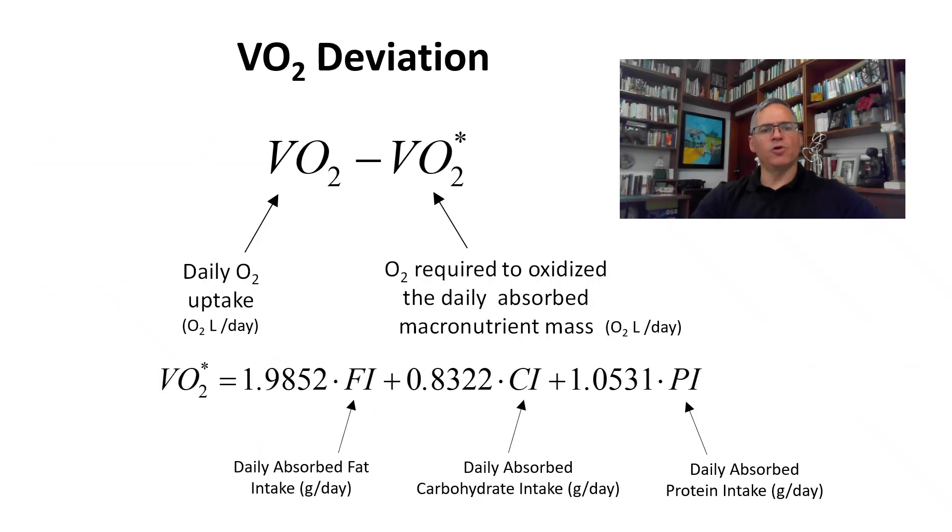I now present a new concept that I call the VO2 deviation, which is defined as the difference between the daily molecular oxygen volume uptake VO2, and the oxygen volume required to completely oxidize the daily absorbed macronutrient intake, where the symbol for the latter is VO2 asterisk and can be computed by the given formula.